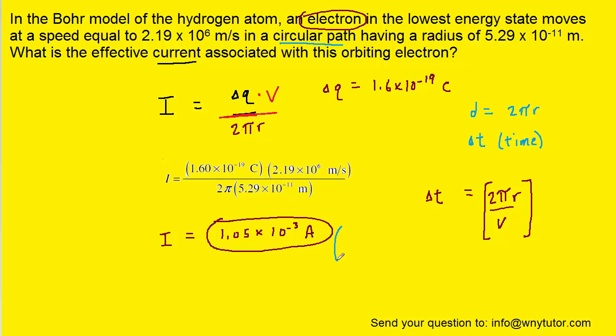If you wanted to convert that into milliamps you could recall that 1 amp is equal to 1000 milliamps. And then the amps would cancel, and when you multiply that out you would get approximately 1.05 milliamps. So that would be an equivalently correct answer.